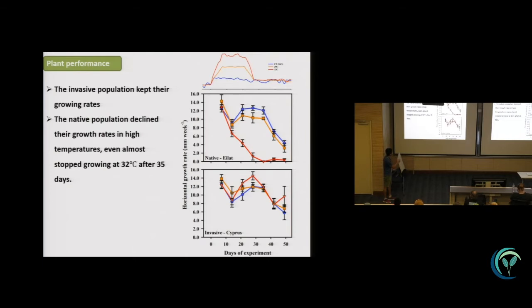But in native plants, after 28 days, even starting from 14 days, the plant reduced the horizontal growth rate. Up to like 28 days, they even stopped growing and they couldn't grow even in the recovery phase when we already decreased the temperatures.